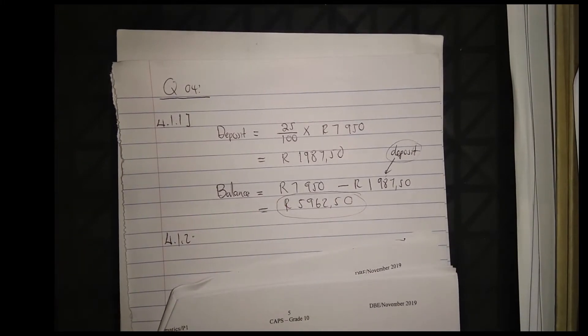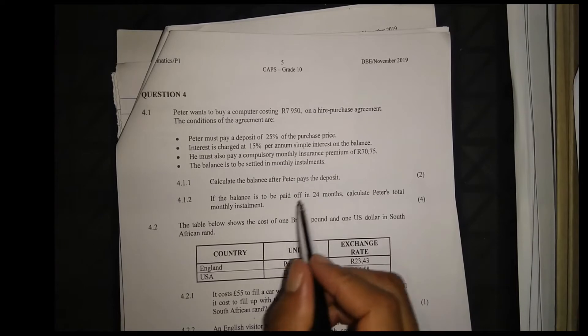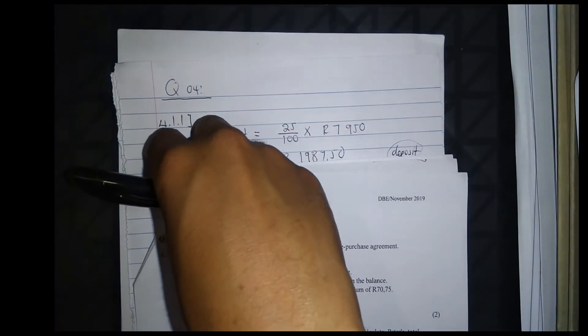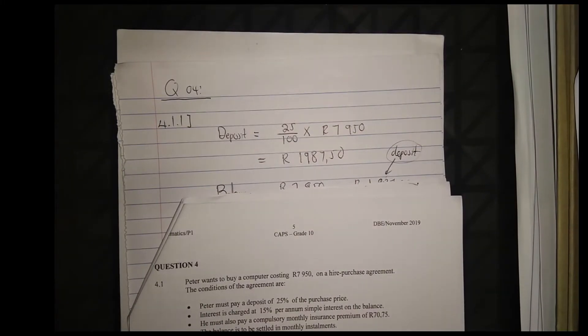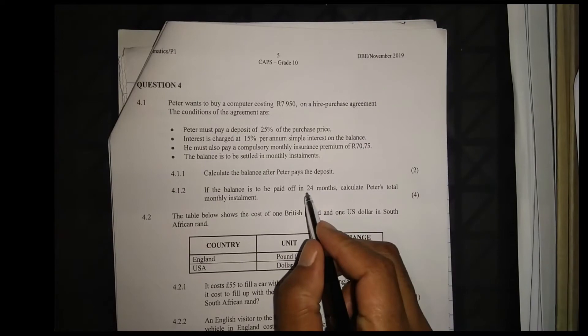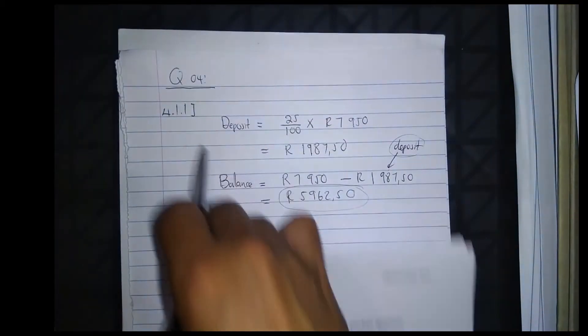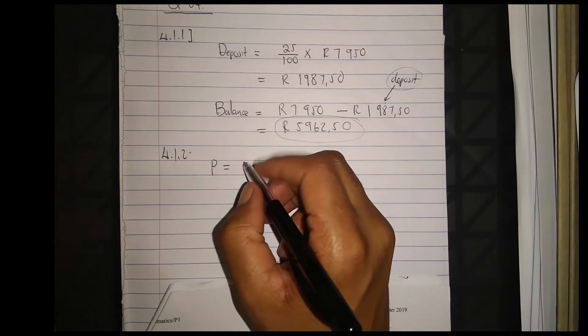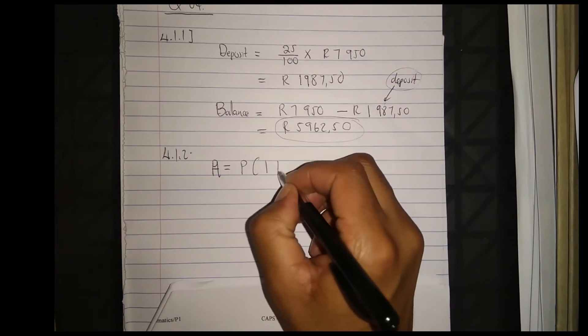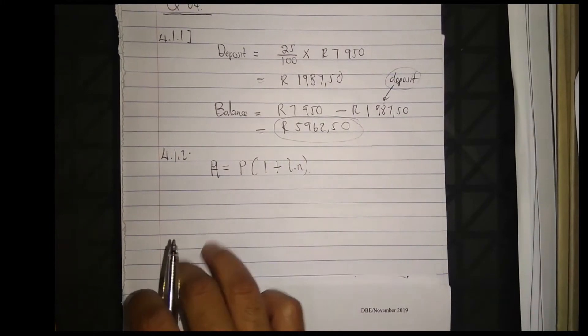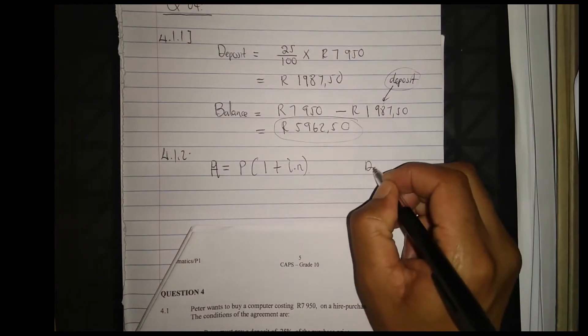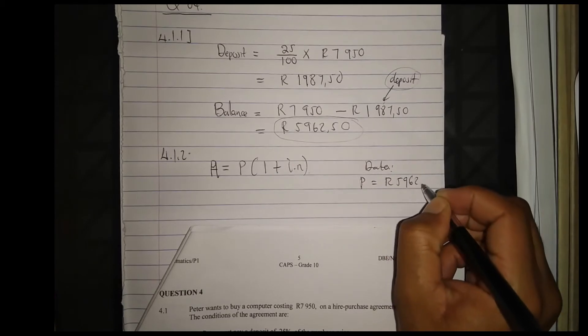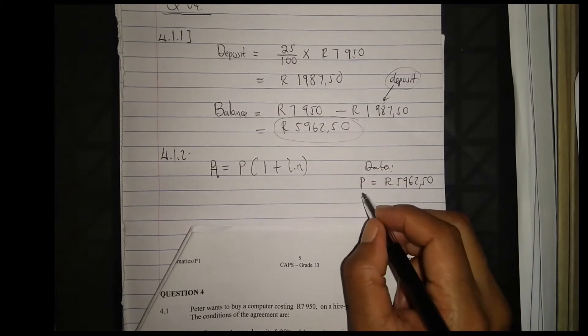Question 4.1.2: If the balance is to be paid off in 24 months, calculate Peter's total monthly installment. The loan is a hire purchase agreement, so it is calculated as accumulated amount equals principal in brackets, 1 plus i times n, calculated on simple interest.